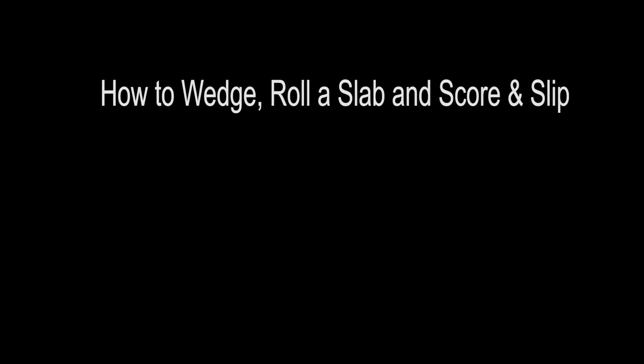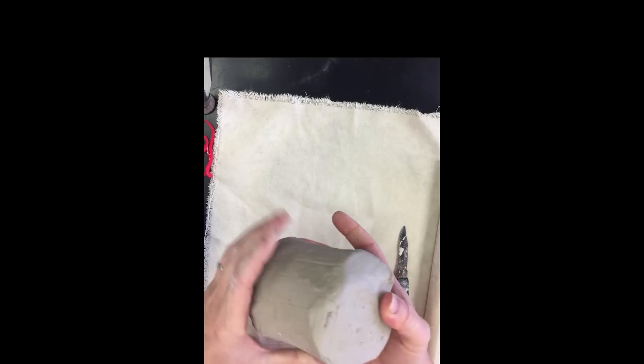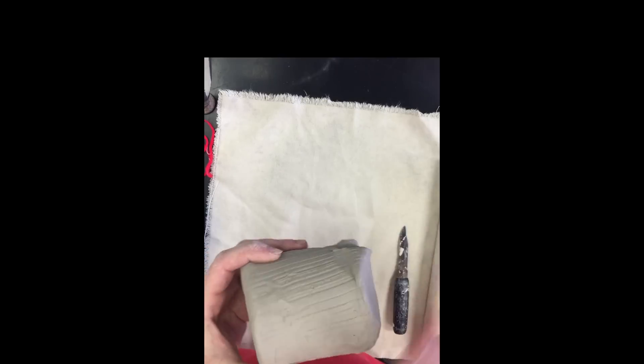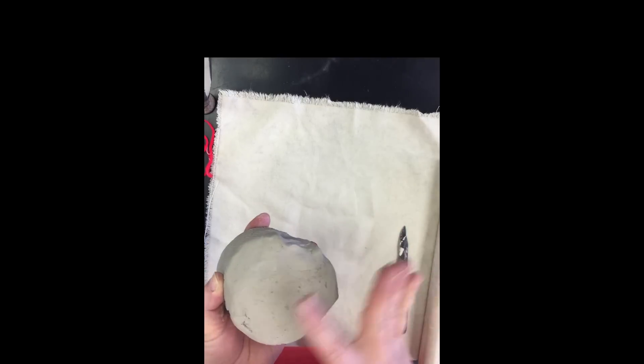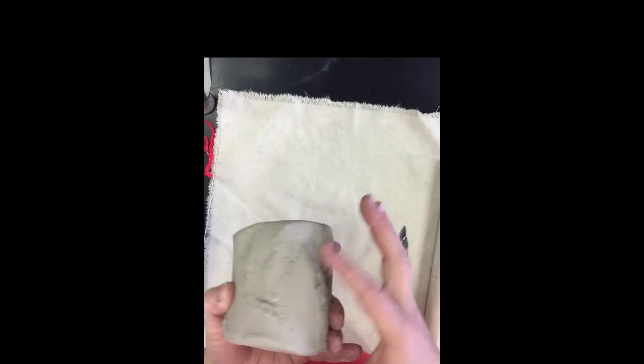All right, let's talk about wedging. So right now you can see this piece of clay here has actually been from the pug mill, so it's nice and smooth. It's got a flat top, flat bottom, the sides aren't too bad. I mean, you're going to have a little bit of this from being in the bag, even something like that, but it's okay.